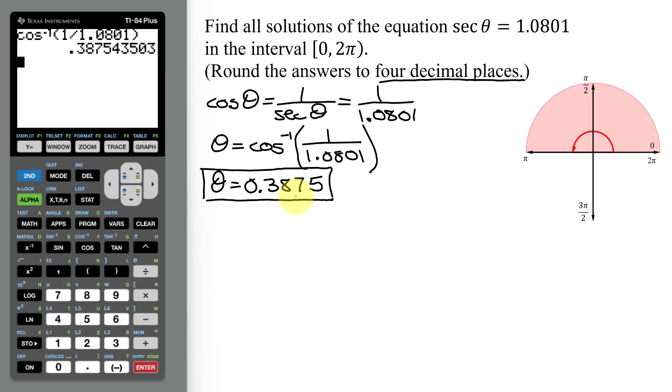Now which quadrant is this angle in? Remember, it's in radians. Here's 0 radians. Here's π over 2, which is approximately 1.57. So my angle is here in quadrant 1. So I know this is a quadrant 1 angle.